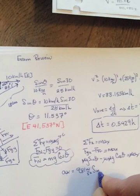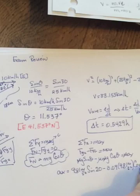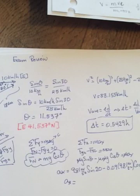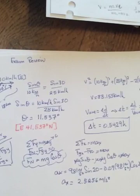So ax is going to be equal to 9.81 meters per second squared sine 20 degrees, minus 0.09 times 9.81 meters per second squared cos of 20 degrees.